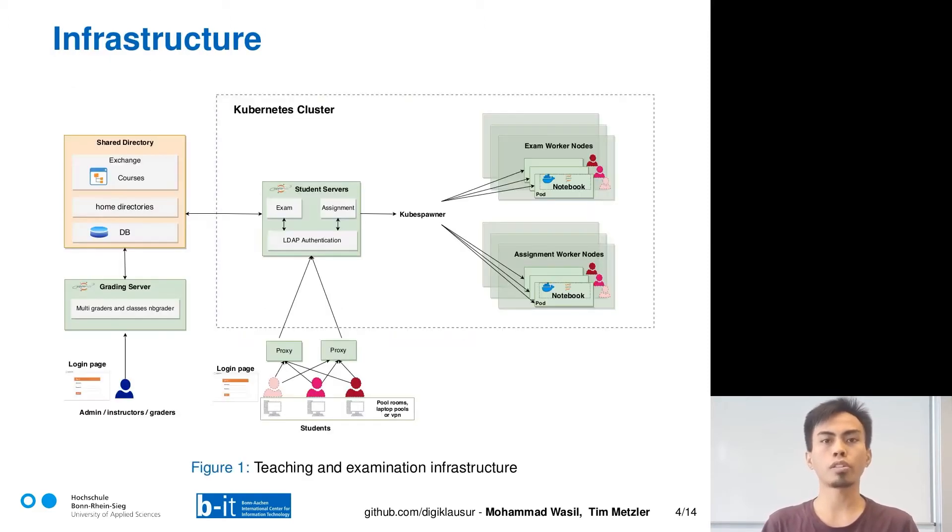Let's continue with our infrastructure. On the left side, we have grading server where the instructors, graders, professors can create, collect, and grade the assignments. And they are released to a shared directory. And on the right side, we have Kubernetes cluster where the exam and assignment servers are installed. We use LDAP to authenticate the users. The difference between them is that the exam server is only accessible from pool rooms and laptop pools, while the assignment server is accessible from outside university network. Furthermore, the exam users will be scheduled to exam nodes, while the assignment users are scheduled to assignment nodes.